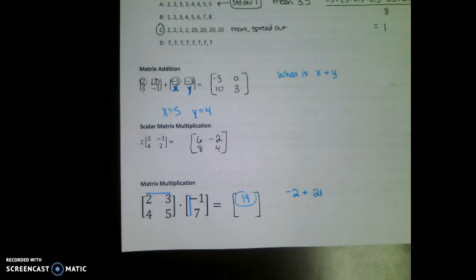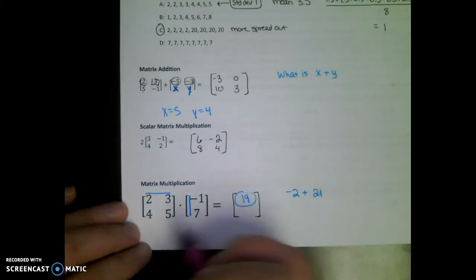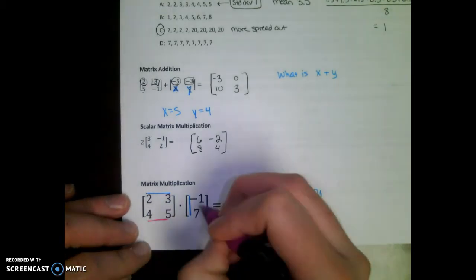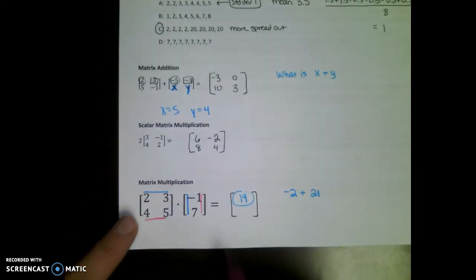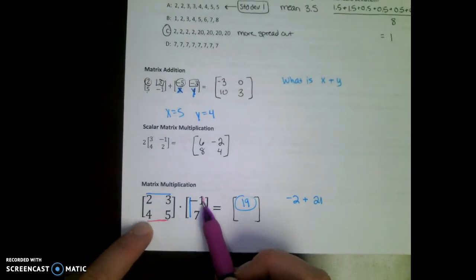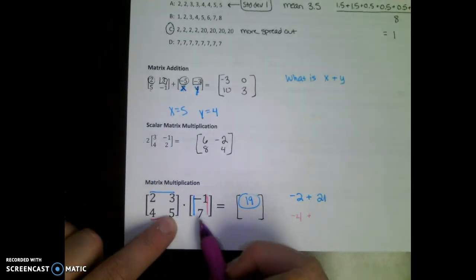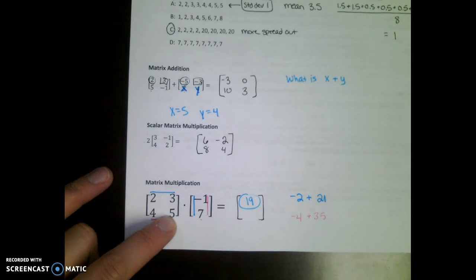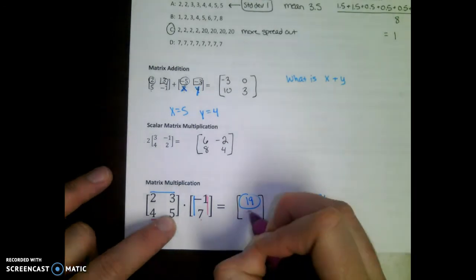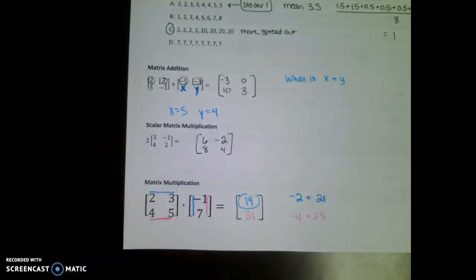So then the next number in my answer matrix is going to be the bottom row times this column. So 4 times negative 1 is negative 4. 5 times 7 is 35. Add those together. That number is 31.